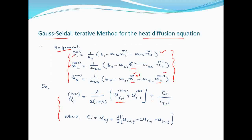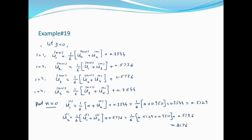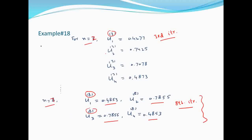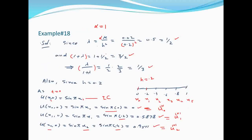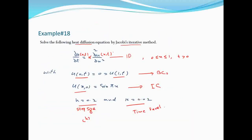Example number 19। यह Example 18 का continuation है। Solve the following heat equation by Gauss-Seidel method — बाकी सब boundary conditions, equation, h step size और k वही है।